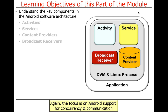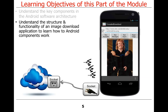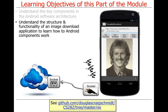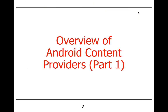You can use content providers without explicitly using any concurrency in your code if you so choose. There are mechanisms built into the frameworks that make that invisible to you for the most part. We'll also use the image download application to make the points more concrete.